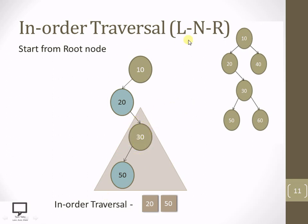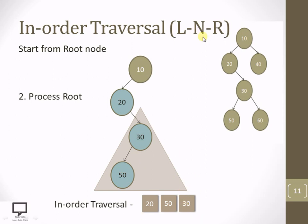Now for 30 you can see that we have done with its left subtree. Now there is a turn to process the root node that is 30. So now let's process the root node, change its color, and I have processed the root node 30. After that, what we need to do? We need to go for the next step, which is to check whether the right child is present or not.